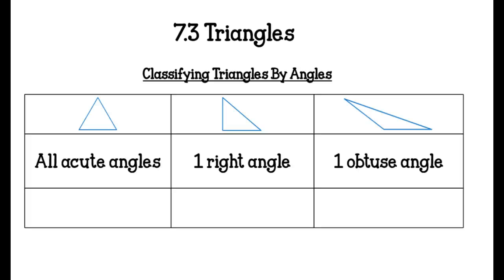7.3, we're looking at triangles and learning how to classify them. There are two different ways that you can classify a triangle. So if it asks for the classification of a triangle, it'll clarify by angles or by sides, or both.